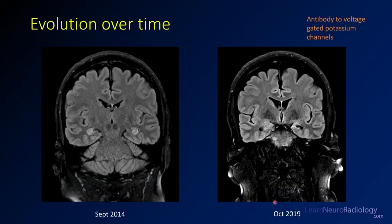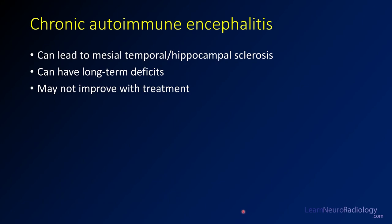This is how it has evolved over time for this patient. In September of 2014, the hippocampi were just bilaterally bright and kind of swollen. Within five years, you see a lot of atrophy with continued T2 hyperintensity. This patient had an antibody to voltage-gated potassium channels, which is why they were having chronic encephalitis, and over time they've lost nearly their entire hippocampal volume. Chronic autoimmune encephalitis, as in this case, can lead to mesial temporal hippocampal sclerosis, and patients can have long-term sequelae and may not improve with treatment.